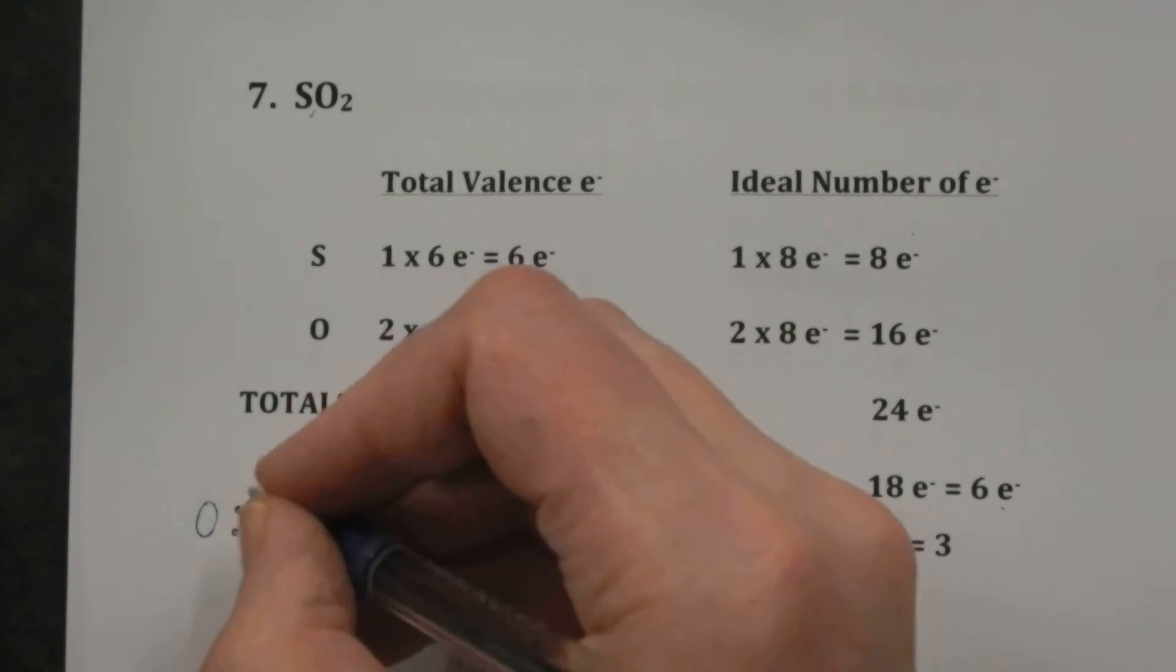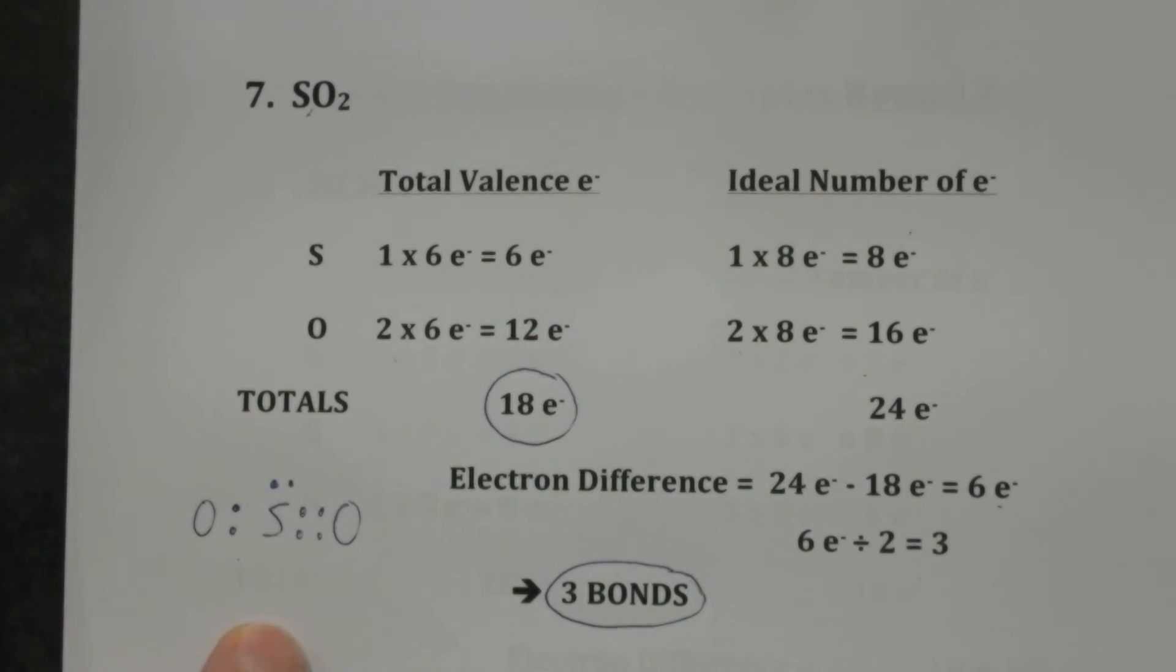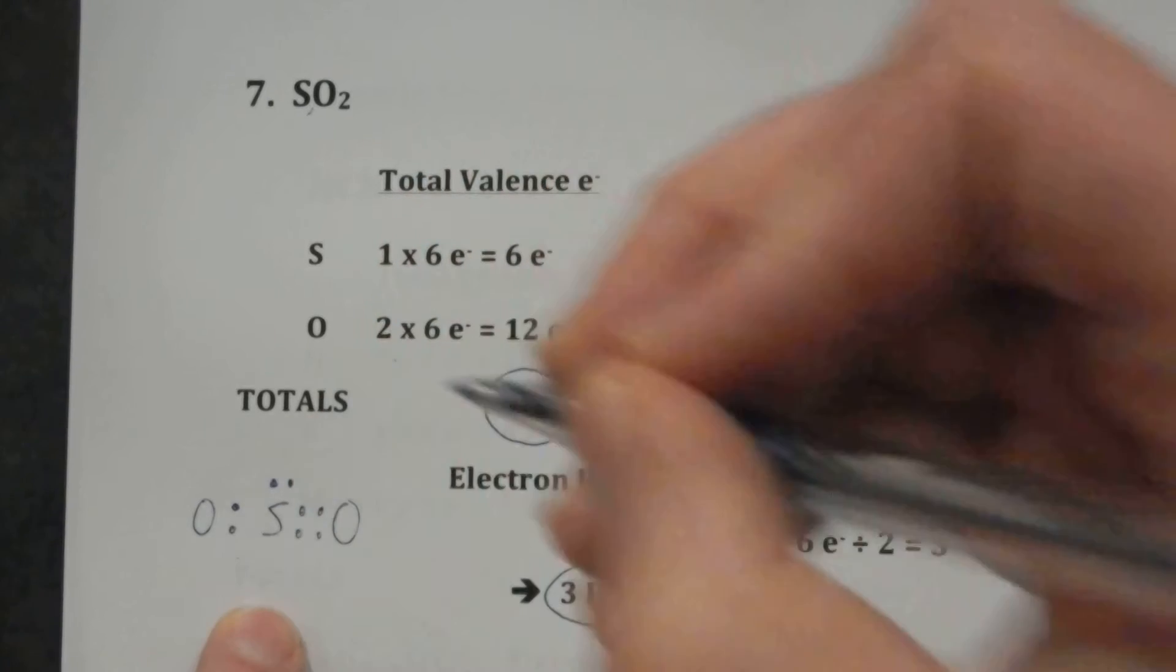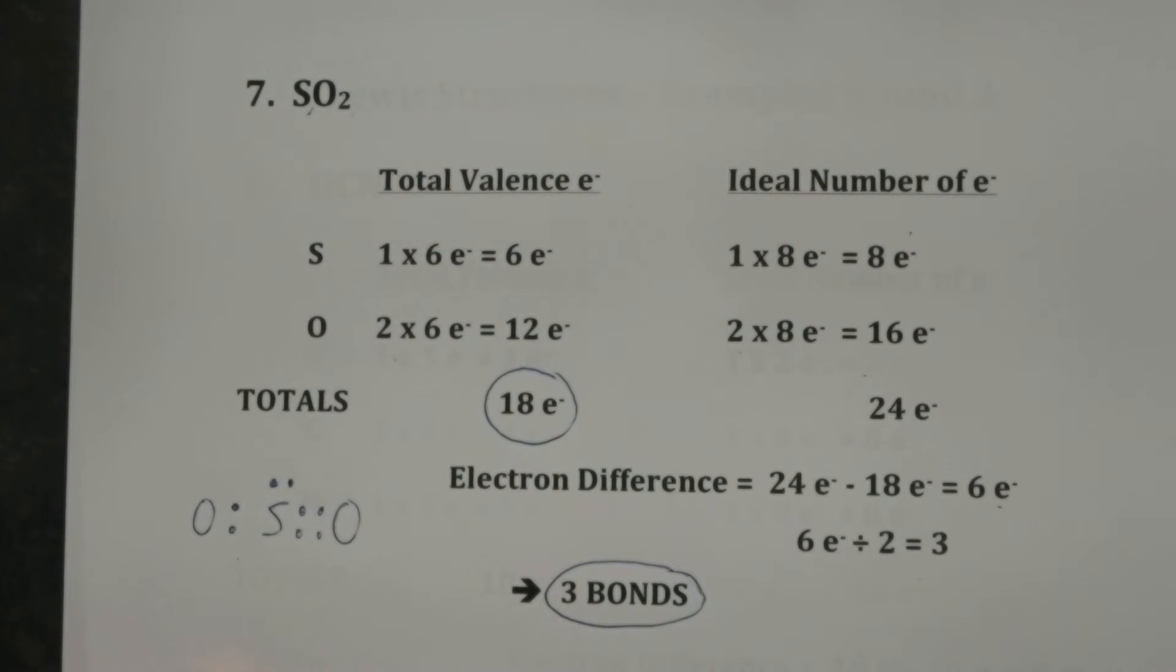All right, we got to make things happy. That sulfur needs another, I better make it so you can actually see it. It needs another pair of electrons. Now the sulfur has eight electrons around it.